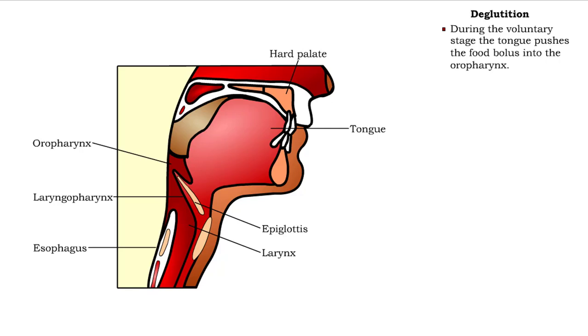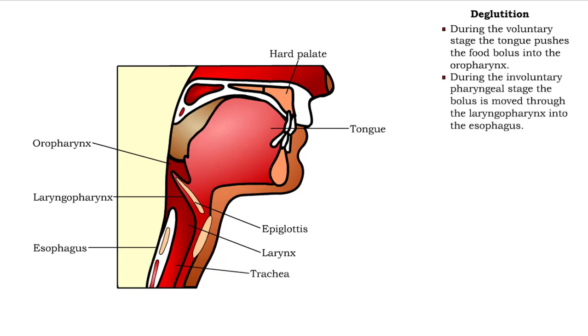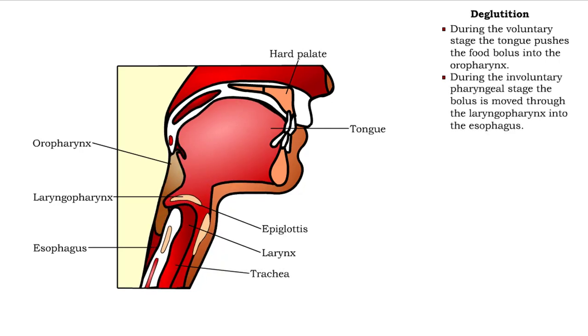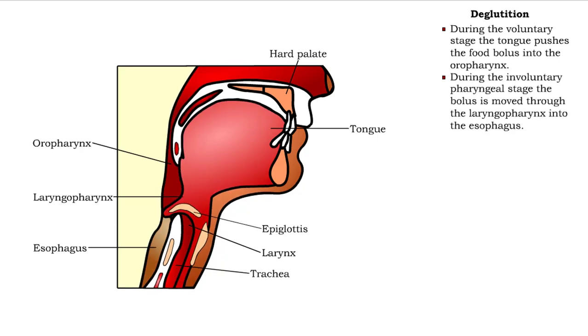During the involuntary pharyngeal stage, the bolus is moved through the laryngopharynx into the esophagus. While this occurs, the epiglottis covers the entrance to the trachea.